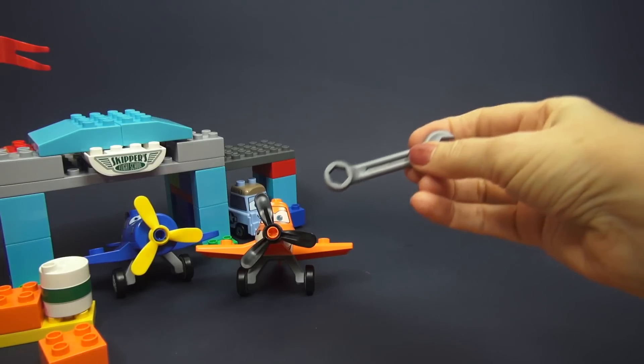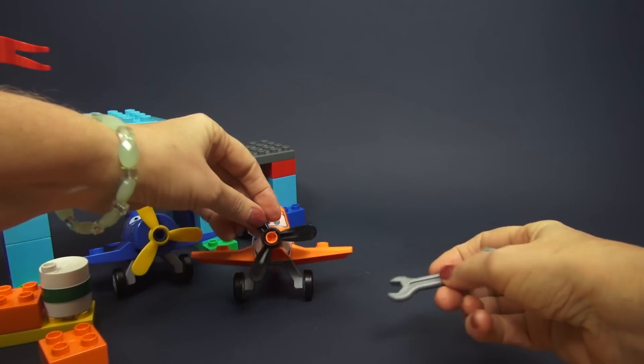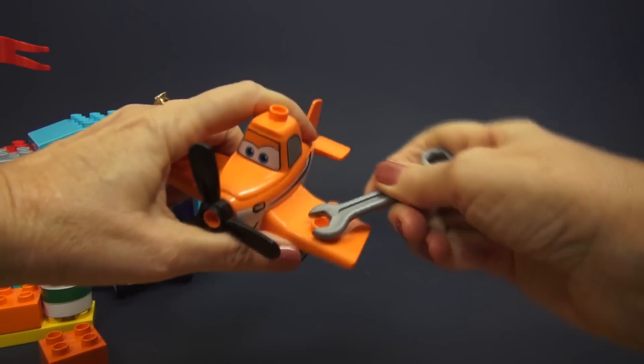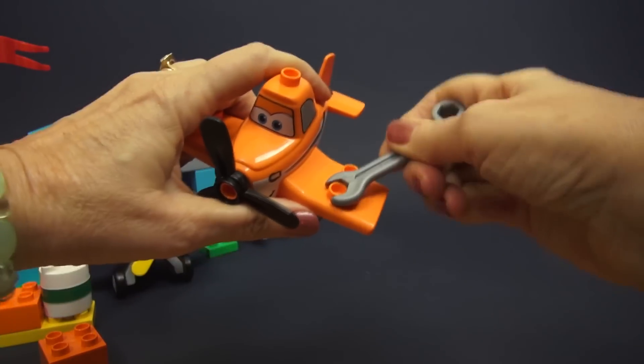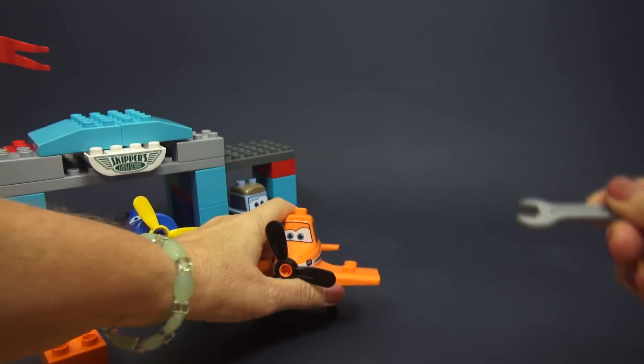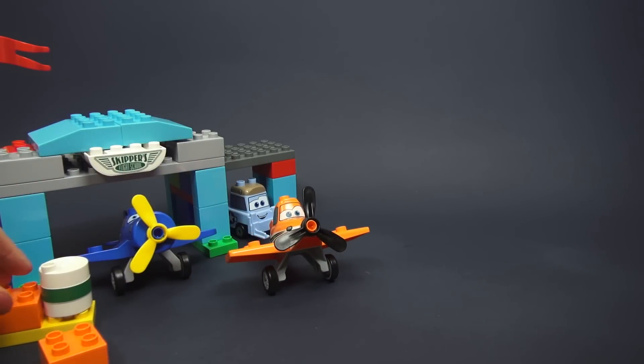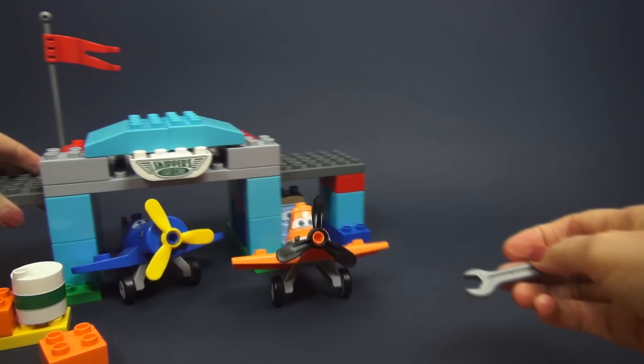And this is great because we can work on the planes. There you go, come here Dusty, I think I see something that's loose there. I can fix that for you, right there you go, now that won't fall off when you're flying high over the ocean or around the world. So let's bring the flight hangar out here so that you get a really good look at it.